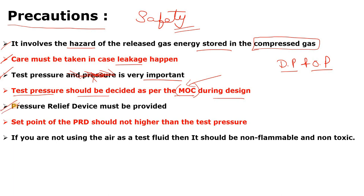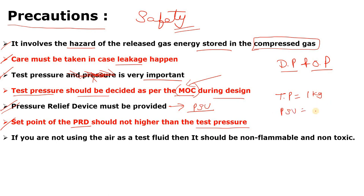Pressure relief devices must be present because you are injecting air to pressurize the loop, and in case of over-pressurization, it may rupture the pipeline or vessel. That is why a PRD must be there — if there is over-pressurization, the PSV can pop up to protect your system. The set point of the PRD should not be higher than the test pressure. For example, if test pressure is 1 kg/cm², your PSV set point at 2 kg/cm² makes no sense — it must be within the range.